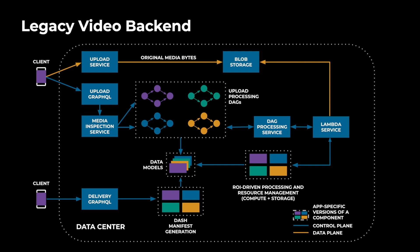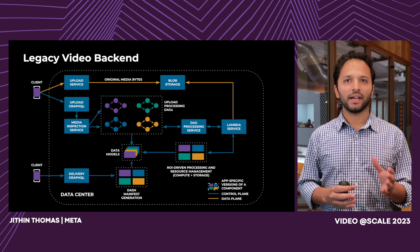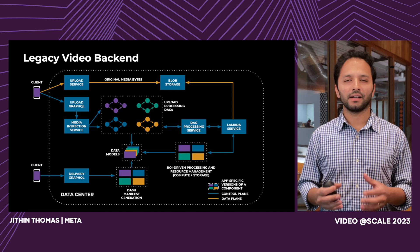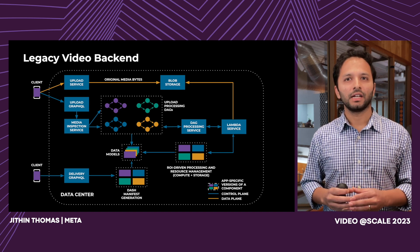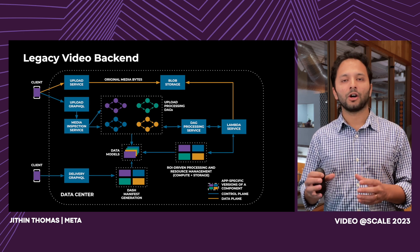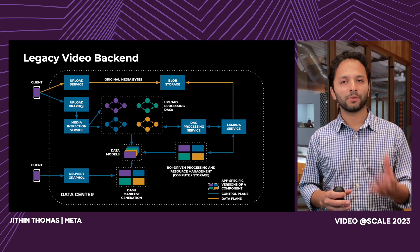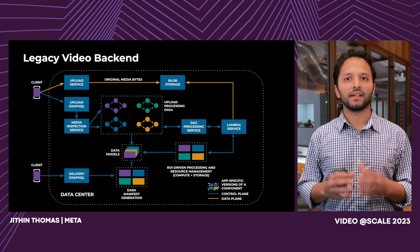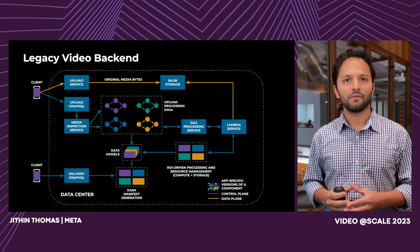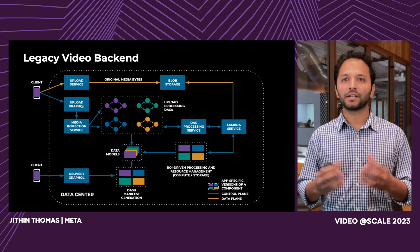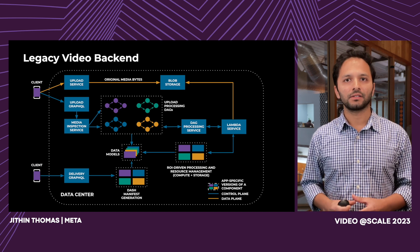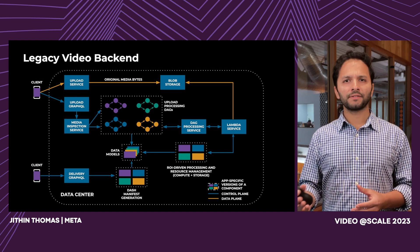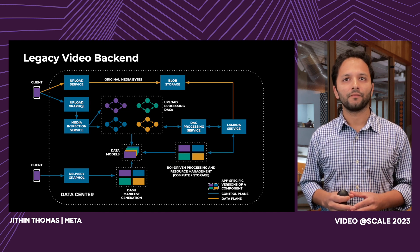The outputs of these tasks are then stored in app-specific data models, including encodings and thumbnails. Once processing is complete, the video is ready for playback and can be published. When a video needs to be viewed, the playback client makes a call to our delivery GraphQL endpoint to generate a DASH XML manifest for DASH playback. On the delivery side, we have app-specific logic to examine the available encodings and filter out the most optimal set based on the viewer's device characteristics, network conditions, and other factors. Besides playback and upload, we also have backend services that tune and optimize resource usage — including ROI-driven processing, which generates more advanced encodings with better compression efficiency for videos with better engagement, and storage optimization jobs that reduce our storage footprint without degrading user experience.